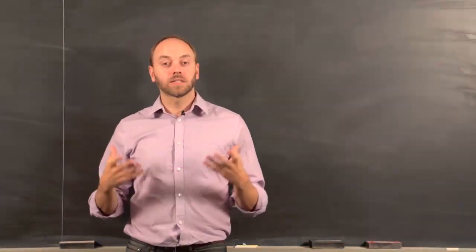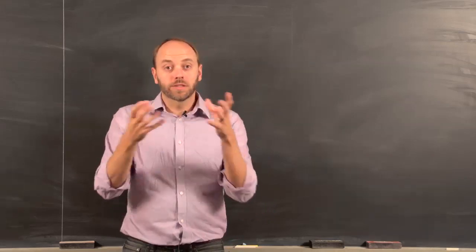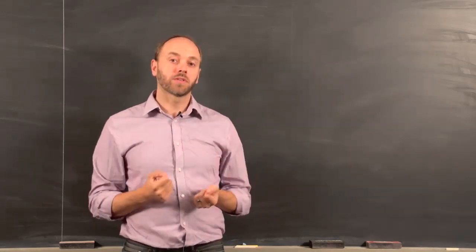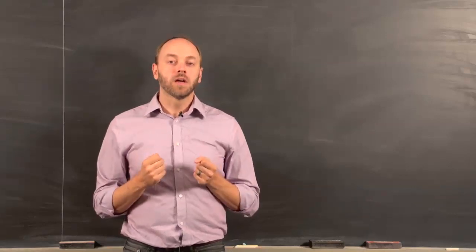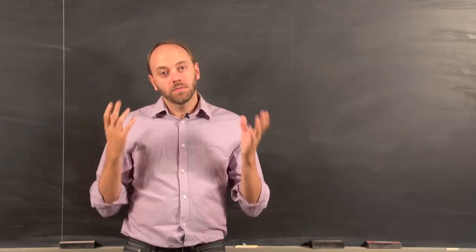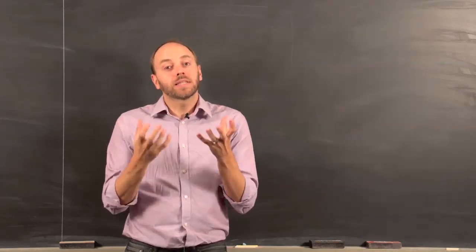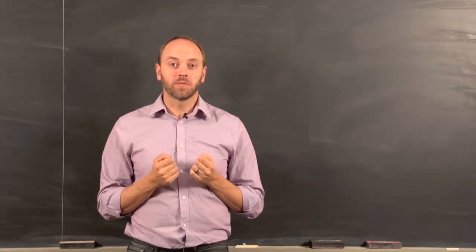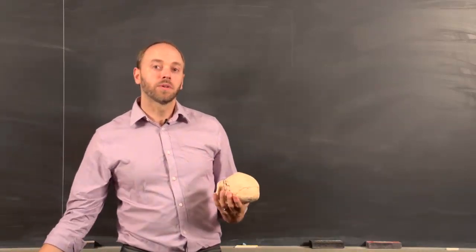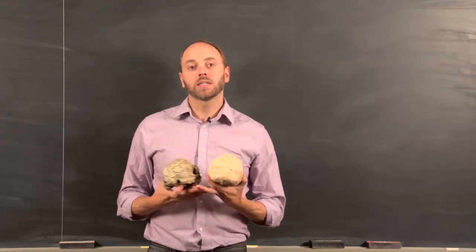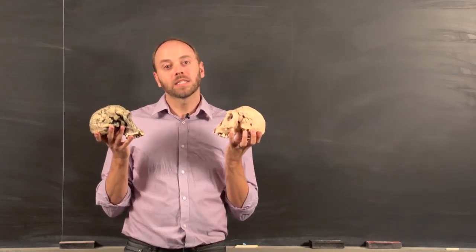We've talked a little bit about how form affects function, and how one of the questions we can ask about fossils is, what does the form of the fossil tell us about the behavior of that organism? But in asking that question, what we're most fundamentally concerned with is: what is it? What is the species? What does that tell us about where this organism fits in the past? If we look at these fossils, the question really is: what are the differences between these two fossils, and how do I explain that difference?